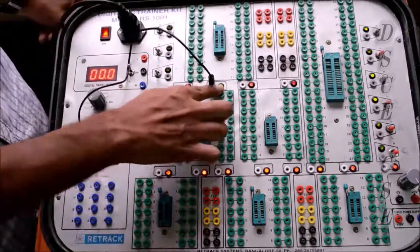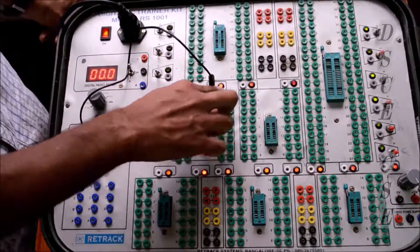If it is given as low, the output will be low. If we give it as 1, we will get it as 1.